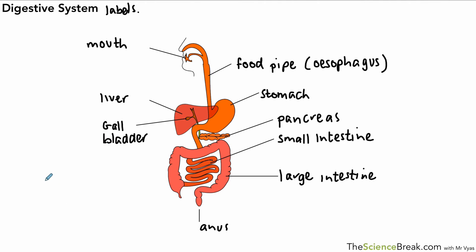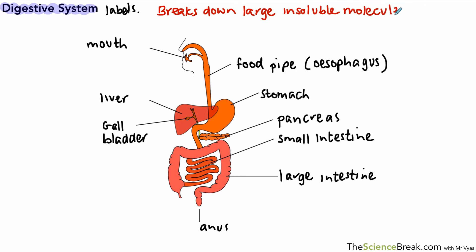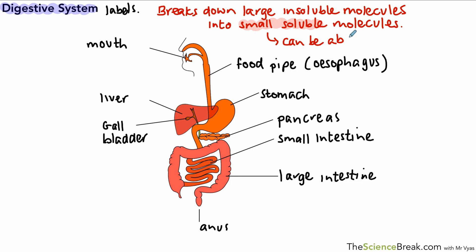These are all important parts of the digestive system that you should know. The digestive system breaks down large insoluble molecules found in our food into small soluble molecules — that's really important because it's the small soluble molecules that can be absorbed into the blood.